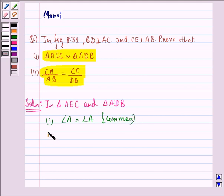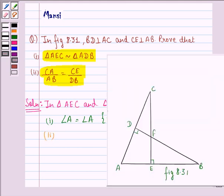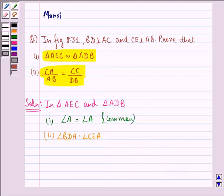Second thing that we see is angle BDA is equal to angle CEA because both of them are equal to 90 degrees, because these are perpendiculars. As we see it is given in the question.